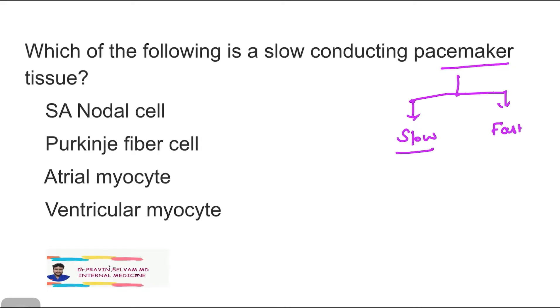The examples of slow conducting pacemaker tissue are SA nodal cell and AV nodal cell. Fast conducting pacemaker tissue includes atrial myocytes, ventricular myocytes, and Purkinje fiber cell. So with this detail we know that the slow conducting pacemaker tissue is the SA nodal tissue. The right answer is SA nodal cell.